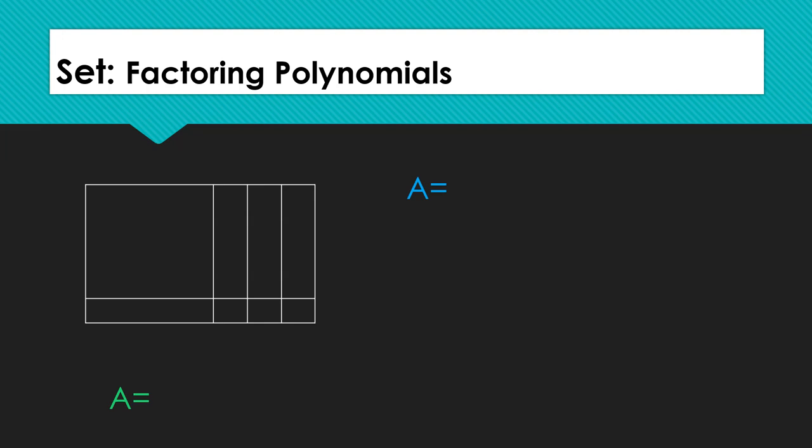Let's review. For the given area model, we know that the original large square is x by x units, so let's start by labeling the square. We also know that 3 units were added across the top and 1 unit was added along the left side. Let's label those. We know that to find the area of the entire rectangle, we must multiply the entire length by the entire width. In today's task, we learned that we could find the area of each individual rectangle and then combine those areas to get the entire area.